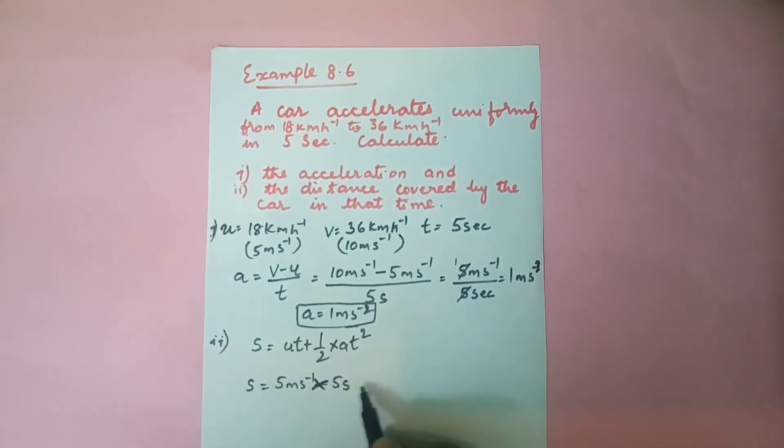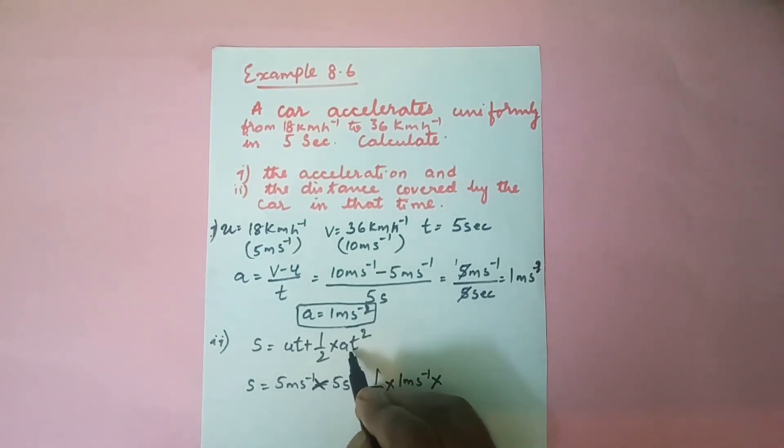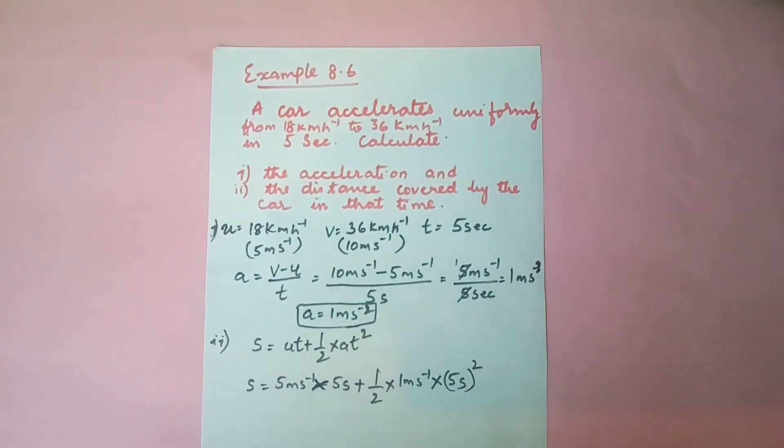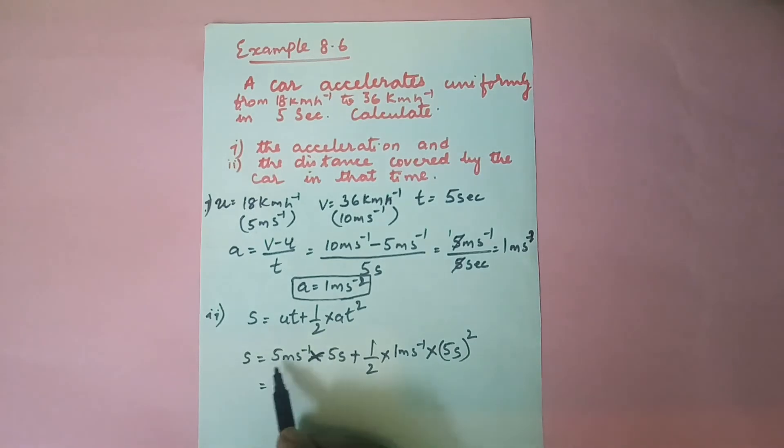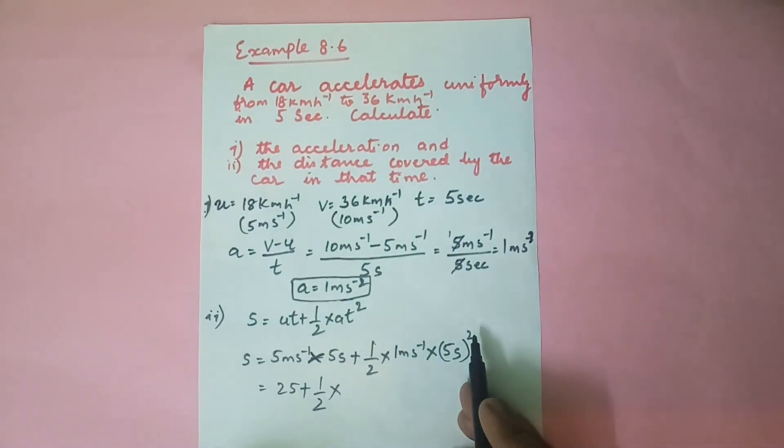Plus half into a is 1 m/s². Again into we have t square, that means 5 seconds squared. So it will be like this. Now we will solve this. So 5 and 5 will be 25, plus 1/2 into we have 5 squared, so 25.